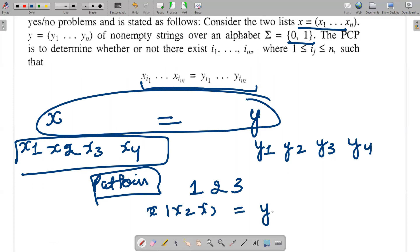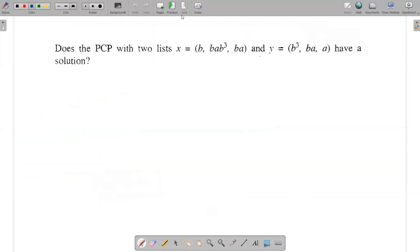From the very first point, I cannot decide unless I perform a particular task. I need to perform a procedure to check whether there is a particular pattern that exists to make sure these two lists are equal. This is undecidability.